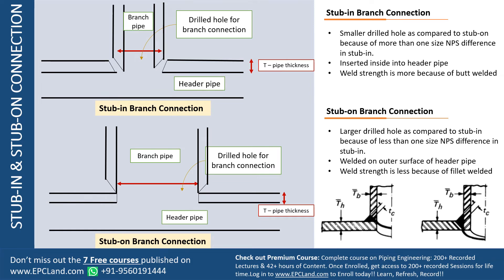The second point is the welding. In stub-in we go for butt weld type, and in stub-on we go for fillet weld type. With fillet weld, we are filling only up to the surface. With stub-in, the branch goes inside the header with a bevel end and the weld fills as a butt weld. Butt welds are stronger than fillet type welds. So stub-in makes the header less weak with a smaller hole, and makes it stronger with a butt weld — that is why stub-in connections are stronger than stub-on branch connections.